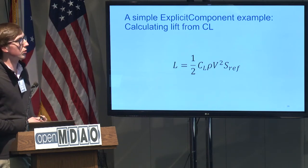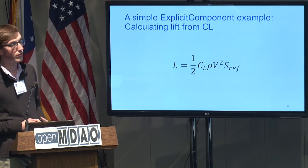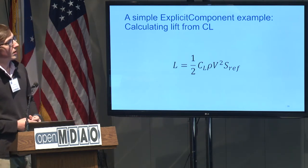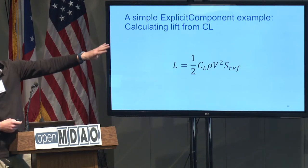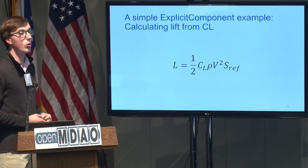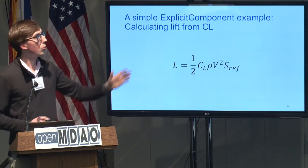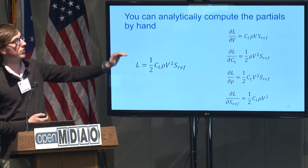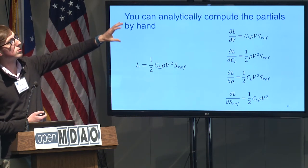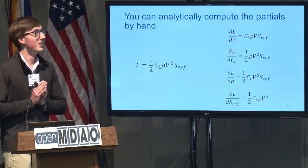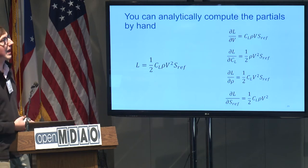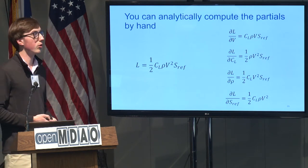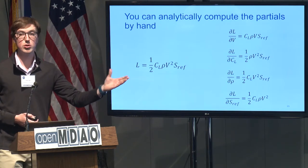To compute partial derivatives, we go back to calculus: use the power rule and write analytic expressions for each partial, like ∂L/∂V. This is one way — hand-derive them and input them into OpenMDAO. If done correctly, they're exact and generally fast because the expressions are simple. You can also let OpenMDAO approximate derivatives for you using finite difference or complex step — more expensive than analytic, but requires no additional engineer time.